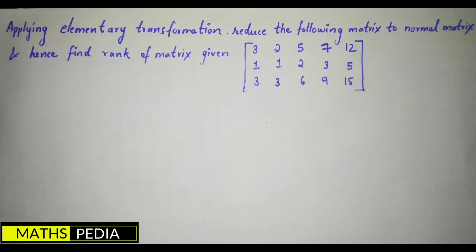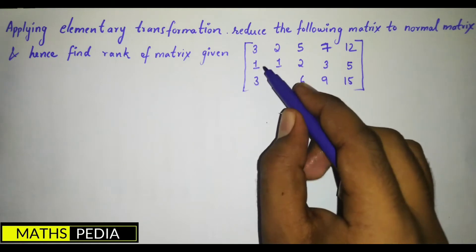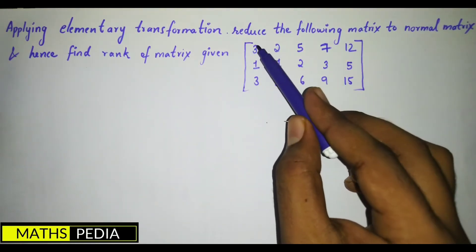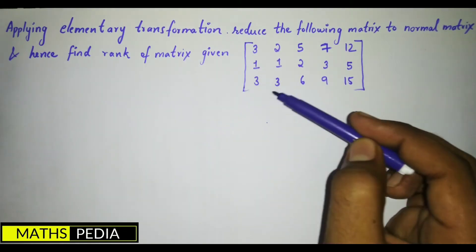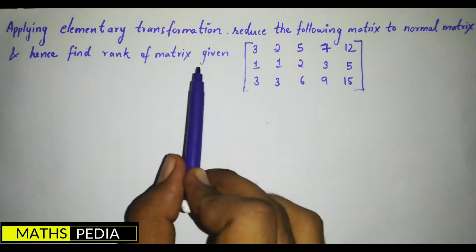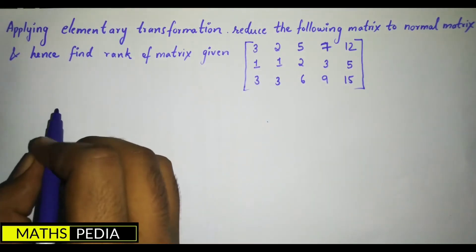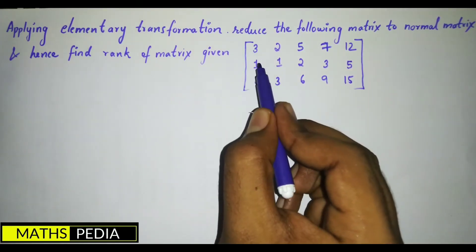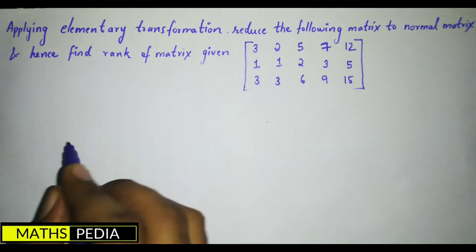Basically, normal form is similar to echelon form, but afterwards you have to convert it further to normal form. So first we obtain the echelon form. To get a 1 in the first position, we will apply a row interchange.